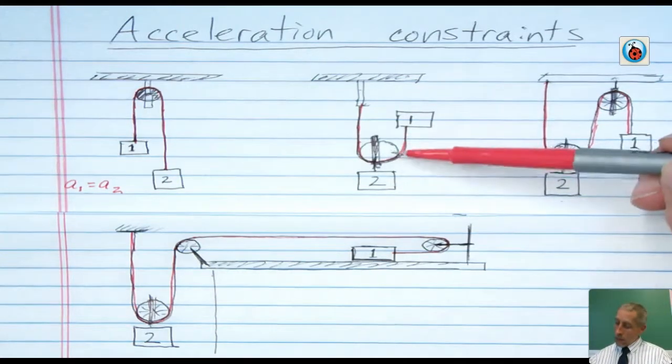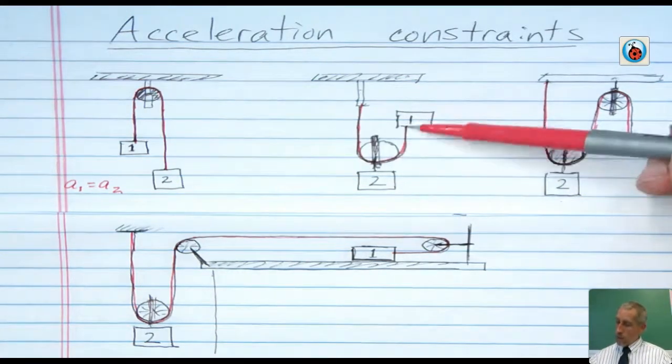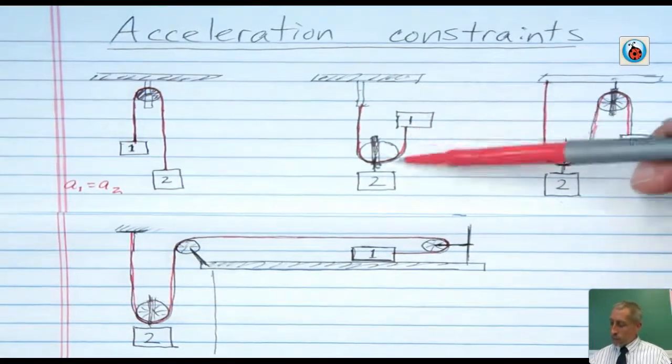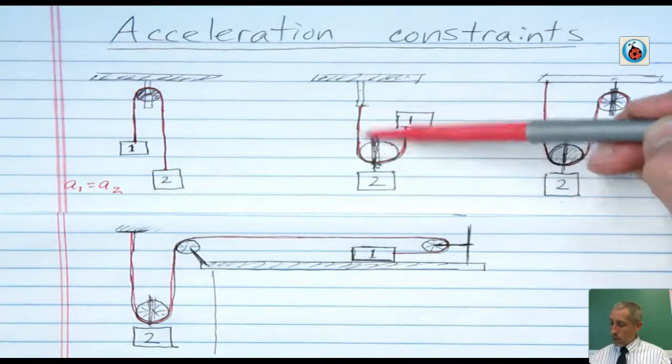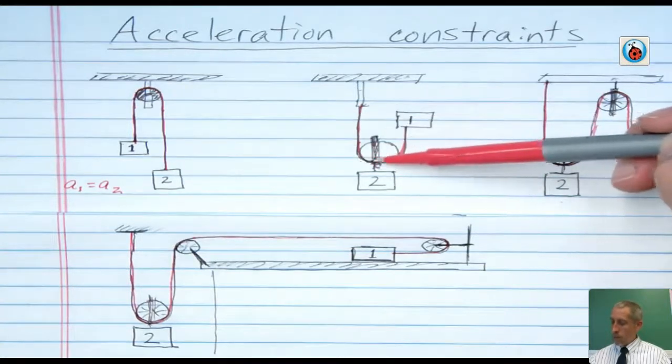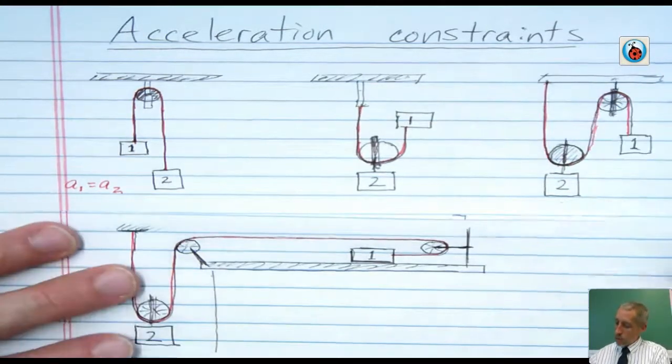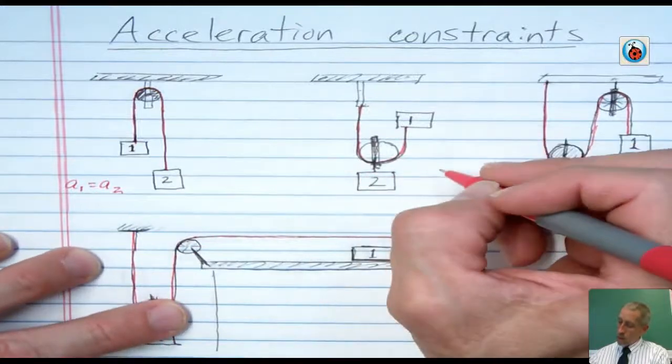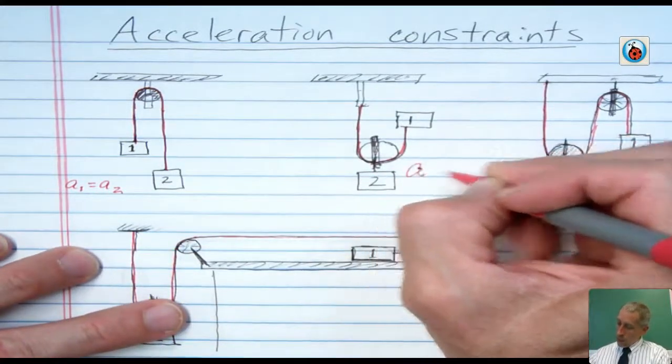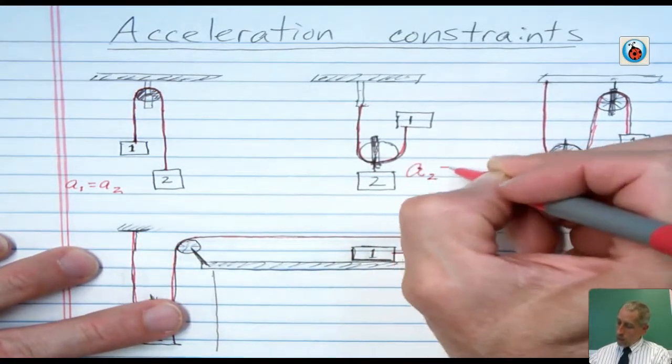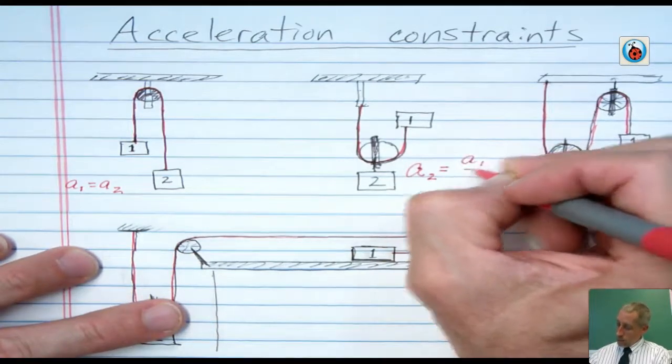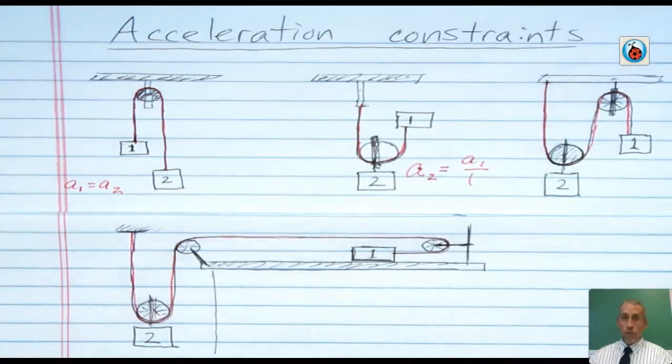And that's because half of the cord that's, let's say, increasing between the pulley and object one comes from there and the rest of it comes from this distance between the pulley and wherever it's tied off here. So again, this would be a very simple thing to set up and really not hard to measure if you had a ruler. But the acceleration constraint in this case is that A2 is only half of A1. It moves half as much and therefore it would accelerate half as much.